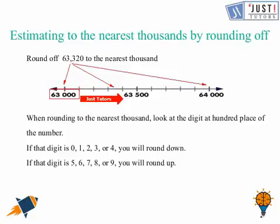Now let's look one more method how to think about rounding off. So when rounding to the nearest thousand, look at the digit which is sitting at the hundreds place. Like in this number, 3 is sitting at the hundreds place.